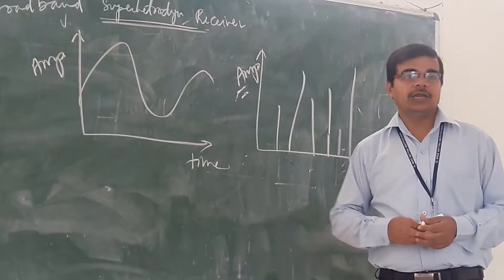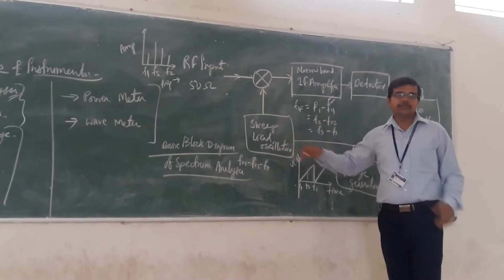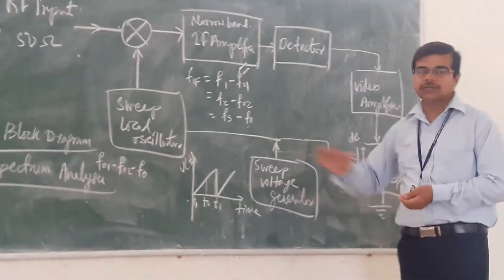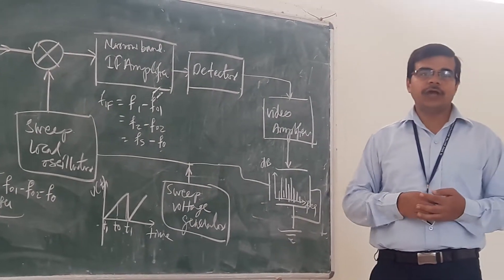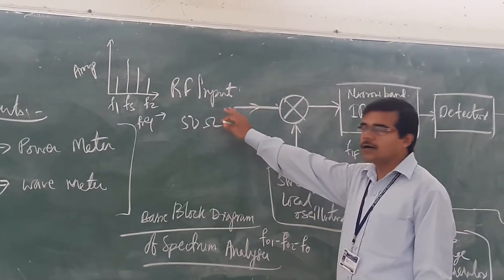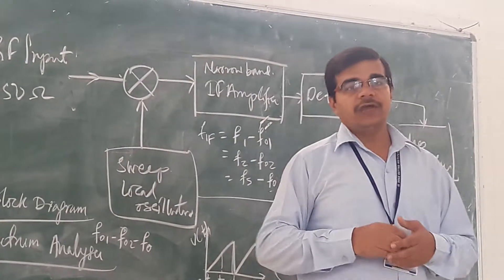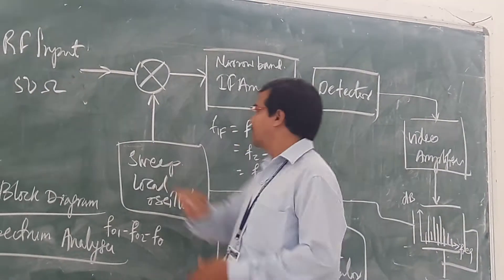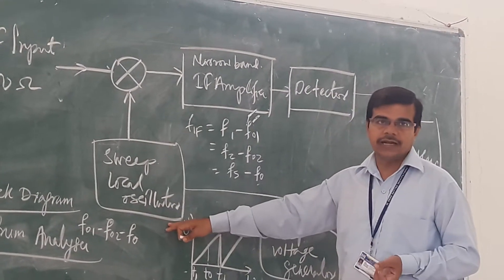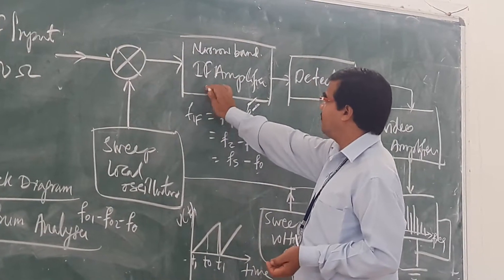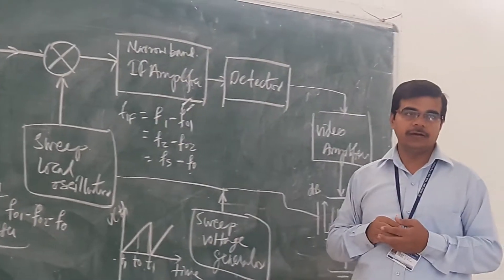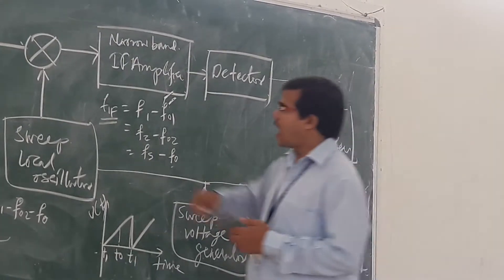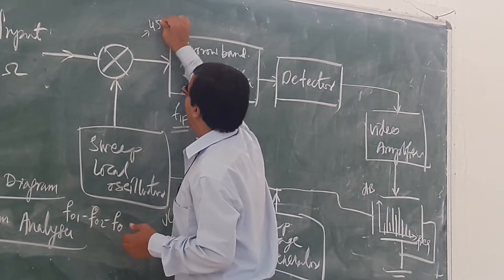Let us now look at the different blocks in the spectrum analyzer. This block diagram is similar to any other superheterodyne receiver. You have the RF input — the spectrum analyzer can be used for RF and microwave frequencies. Inside, you have an attenuator coil followed by a narrow-band IF amplifier. The IF frequency is generally 450 kilohertz.